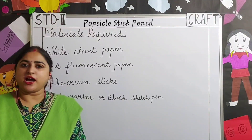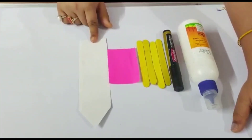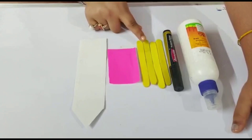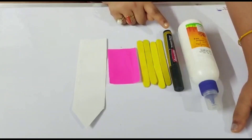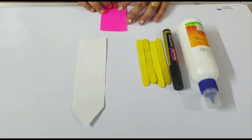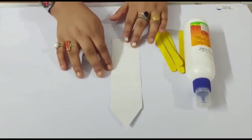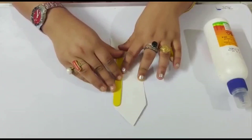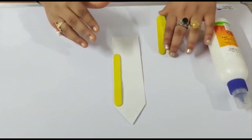Let's see how to make a popsicle stick pencil. To make it, we need a pencil-shaped white chart paper, pink rectangle paper, four yellow painted ice cream sticks, black marker, and fevicol. Firstly, children, we need the base of the pencil. Now we will stick all four ice cream sticks on the paper. So you need to follow the instructions as I'm doing.